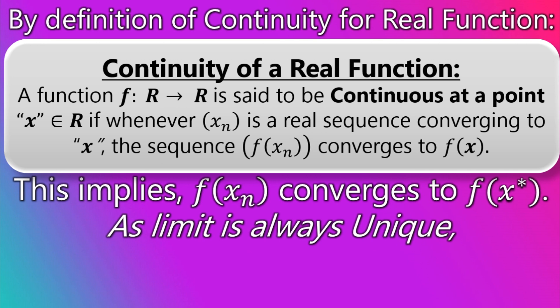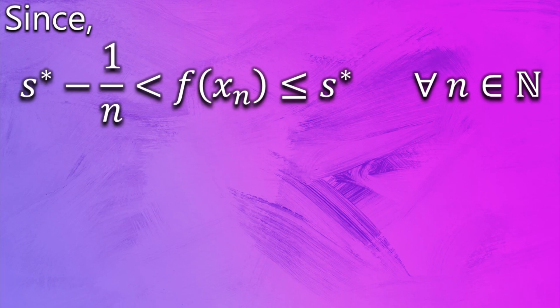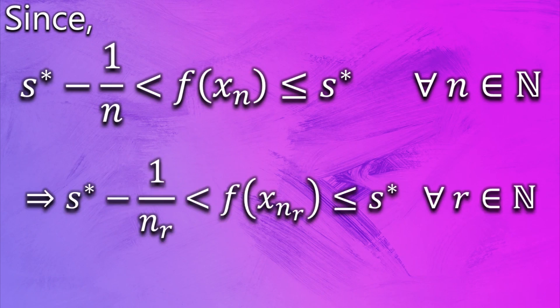And since we know that the limit of a sequence is always unique, we can say that f(x_{n_r}) also converges to f(x*). Since f(x_n) lies between these two terms, this implies that f(x_{n_r}) also follows the same principle.